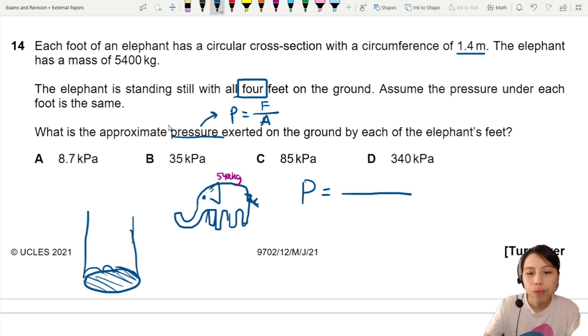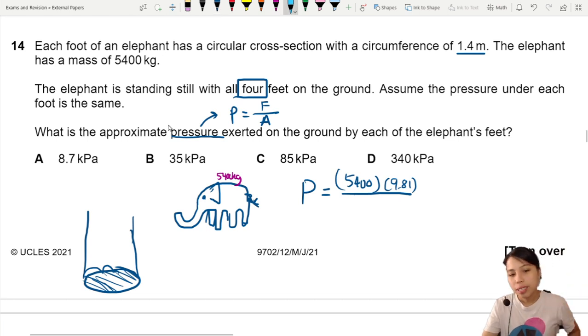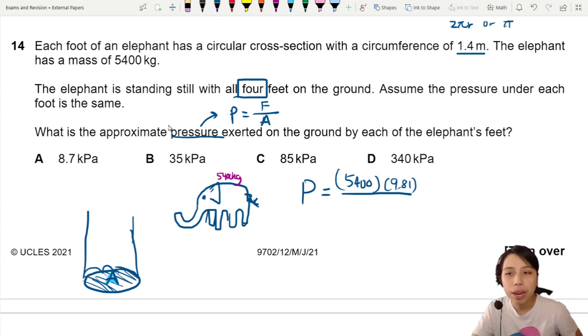Let's do a calculation here. 5400 times 9.81, that's the weight. Then the cross-section area. So this elephant has four feet. Each feet got a certain area with a circumference. How do you find area from circumference? Circumference is 2πr, right? That's how you'll find it. Or the other way is πd. I think we need to find a diameter. Okay, let's do that. So if πd is equal to 1.4, d is just 1.4 over π.